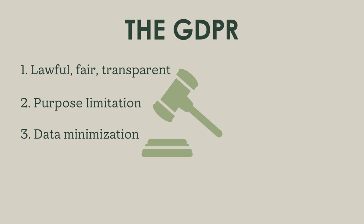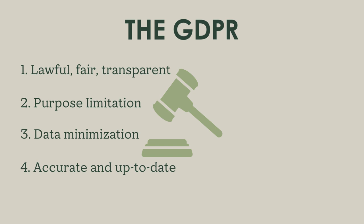Data minimization is a very important concept in this entire discussion, although it's not really one that organizations have been particularly good at adopting in spirit so far. Principle four: all collected personal information must be kept both accurate and up-to-date, and if inaccurate for any reason, should be erased or rectified without delay. This is an important element of personal information privacy, as it relates to the integrity part of the CIA triad discussed in the previous video — that is, decisions about things like your credit score should not be ruined by banks and credit rating agencies having out-of-date or generally false information about you.